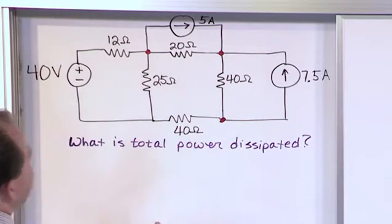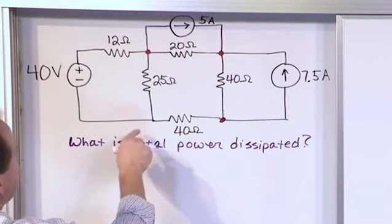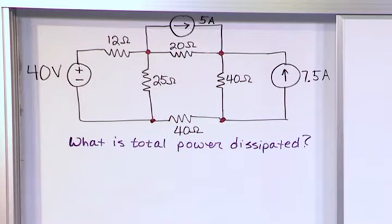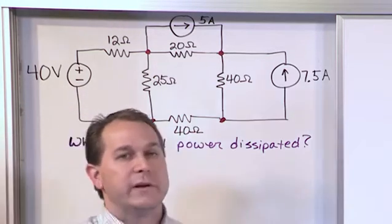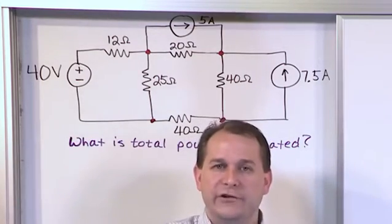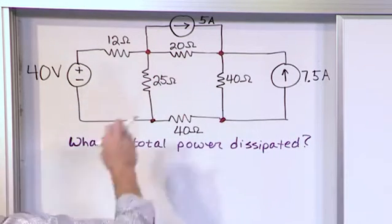Now this is also an essential node here as well, that's definitely true. So I could just put a dot here. So I have four essential nodes here. I know from our previous discussion that I'm going to need three node voltage equations, because you need one less equation than the number of essential nodes you have. So I have four essential nodes, I'm going to need three equations.